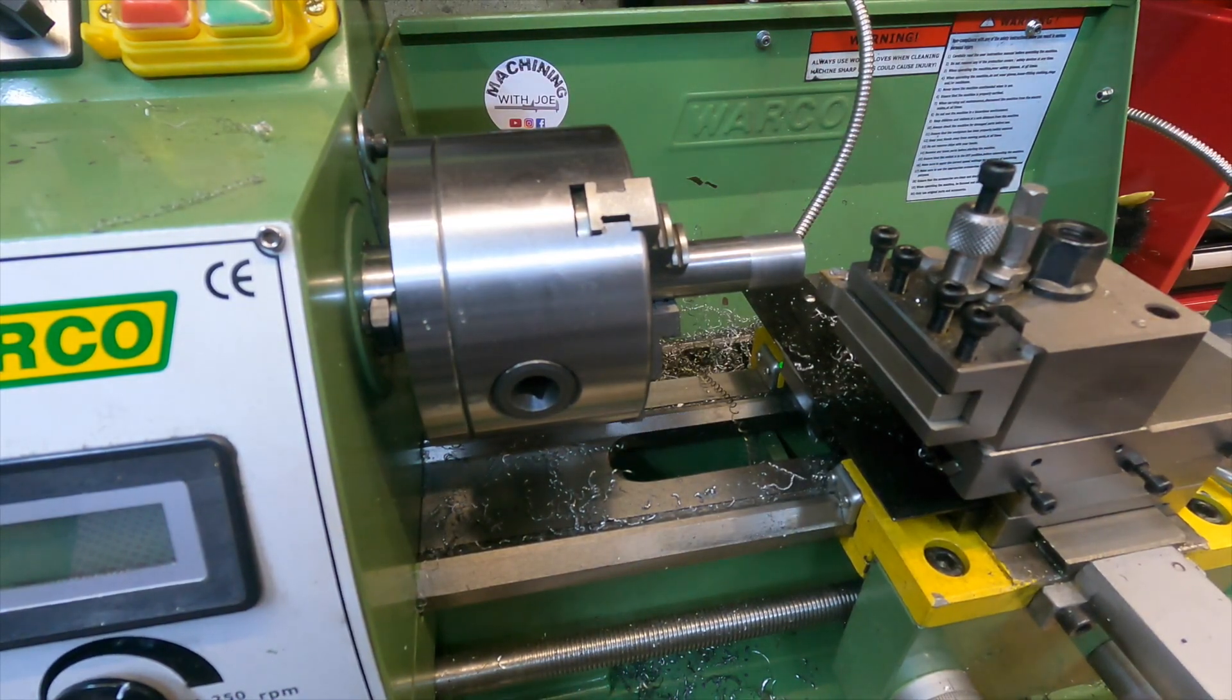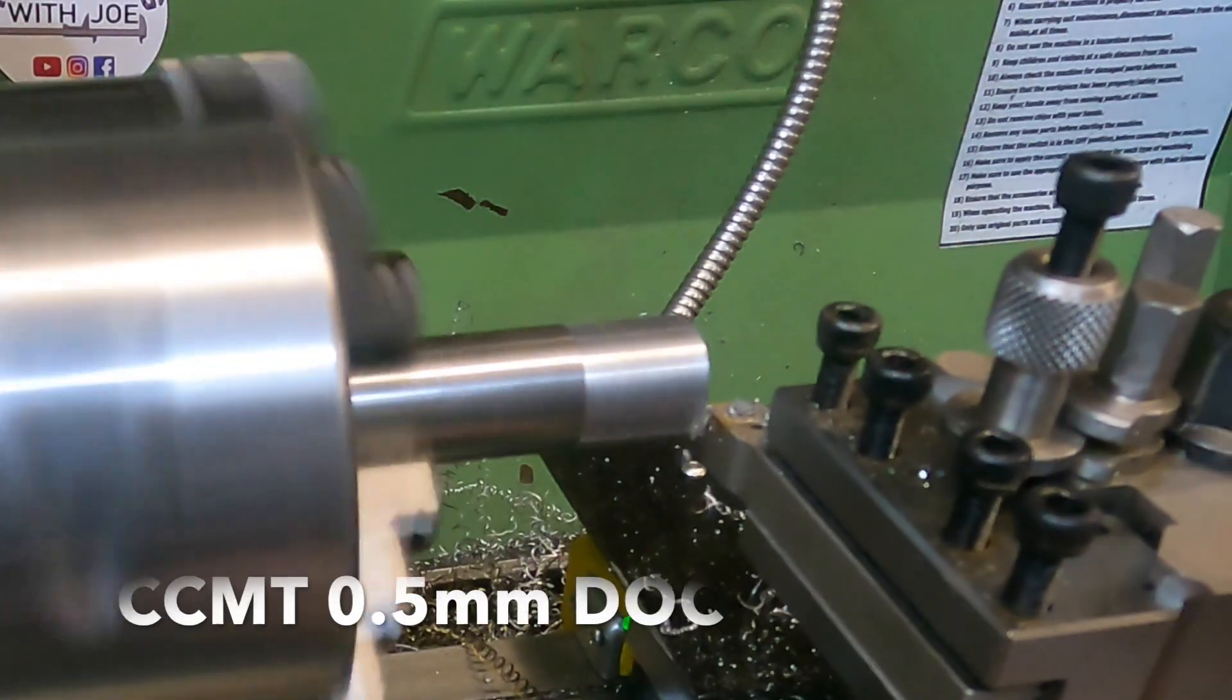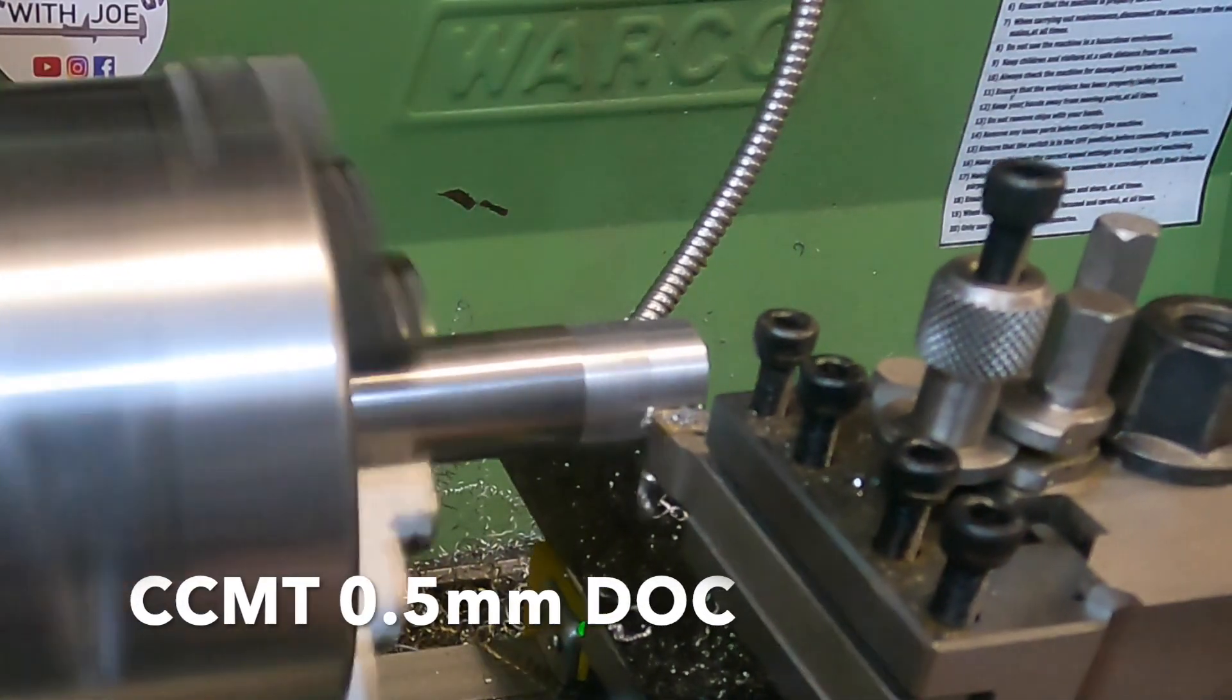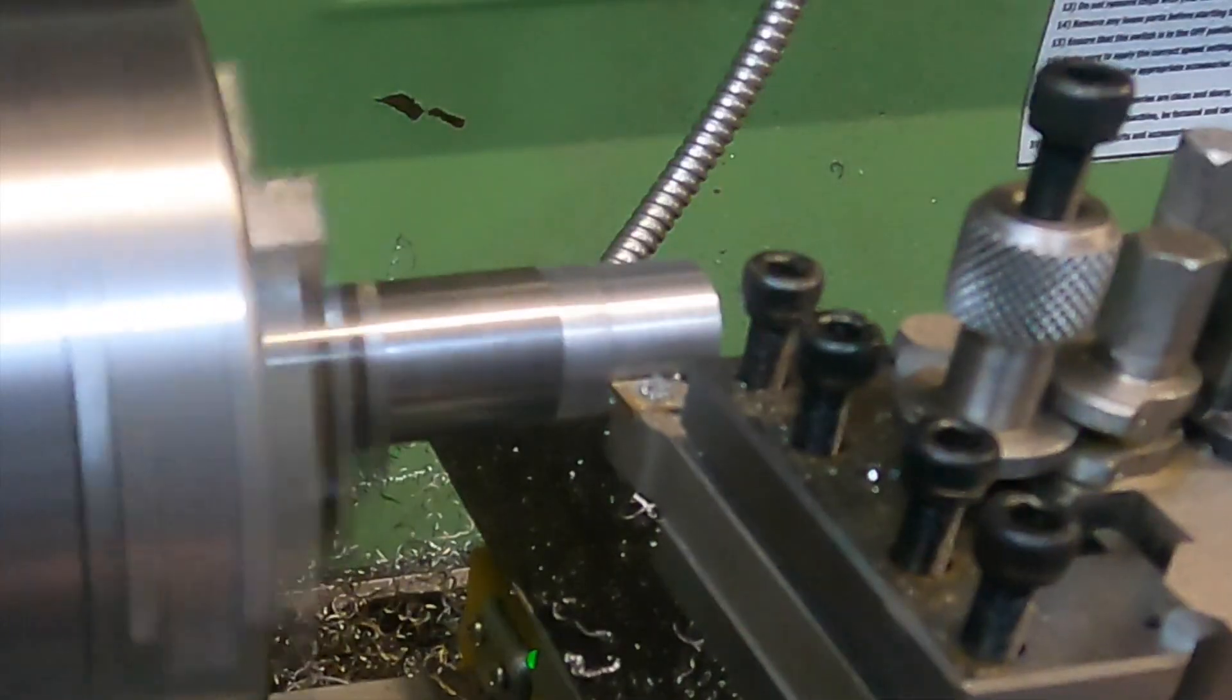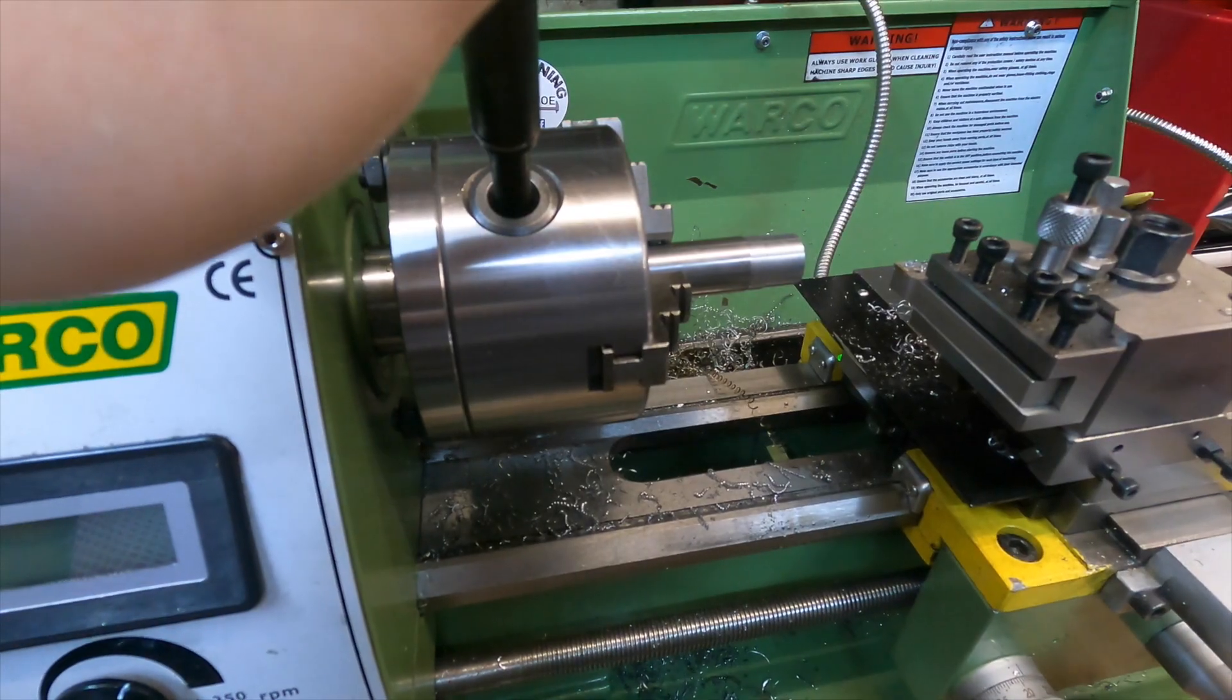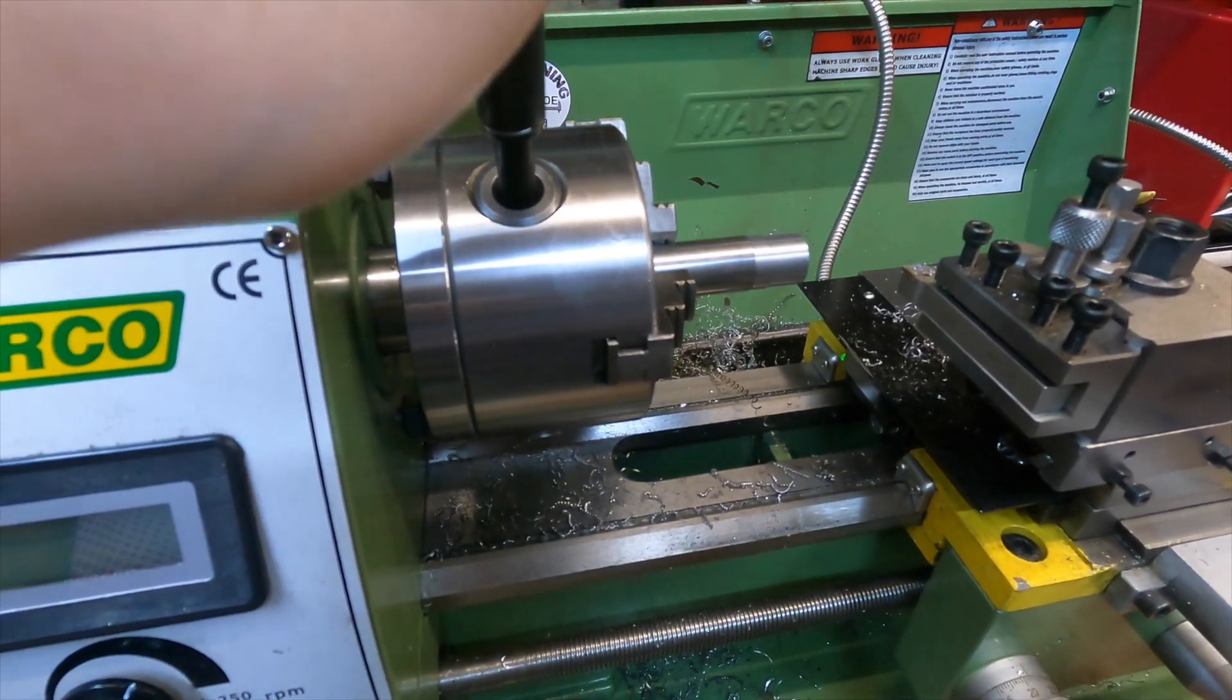Let's do a 0.5 millimeter depth of cut now and we'll see where that leaves us. Right, that's the mild steel done. Now I'm going to put that to one side and we'll come back after the aluminum and we'll compare the two and see what the difference is.